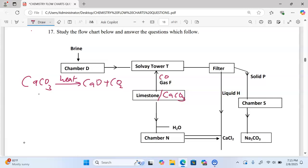So gas F becomes carbon dioxide. Then we have calcium oxide coming down where it combines with water in the slaker to form calcium hydroxide.